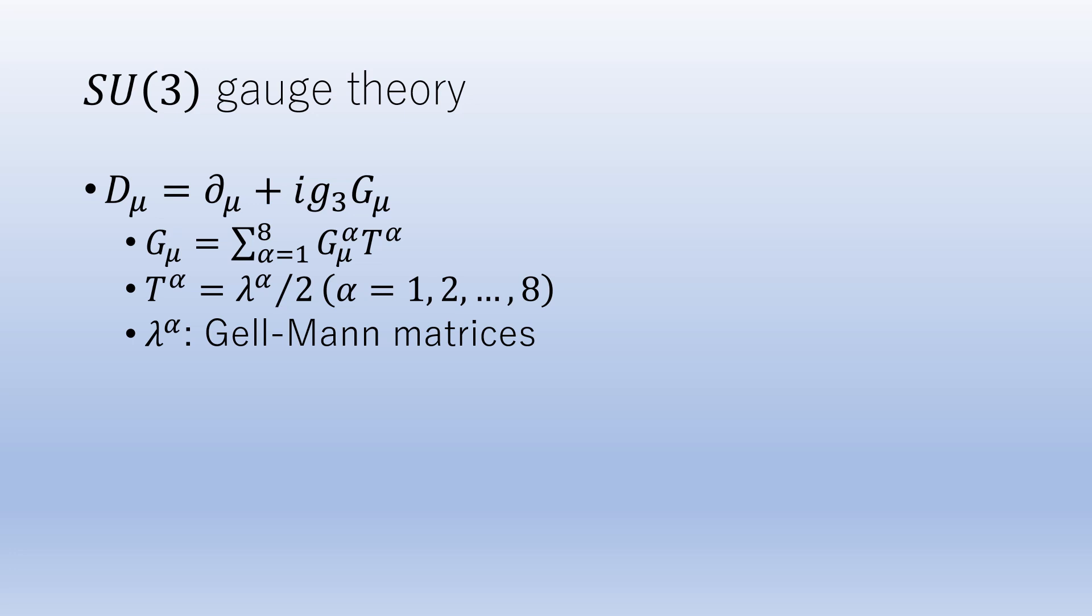Here, G₃ is a coupling constant that represents the strength of the SU(3) gauge interaction. Just as the electromagnetic force acts between charged particles by mediating photons, the strong force acts by mediating gluons between quarks.